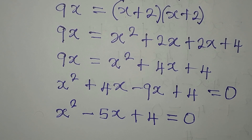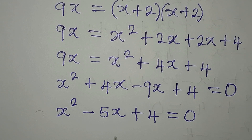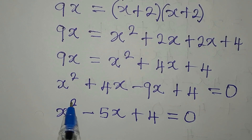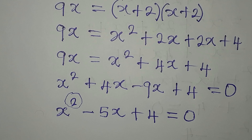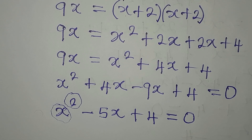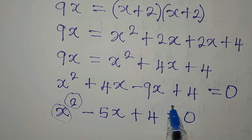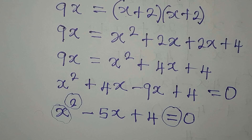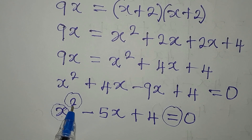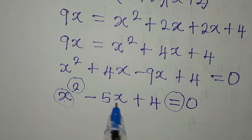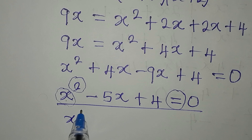This is a quadratic equation. You know it is quadratic because of the unknown variable, the highest power of 2, and the equality sign — those three things make an equation quadratic. Now how do we solve x squared minus 5x plus 4 equals 0? We'll use factorization.